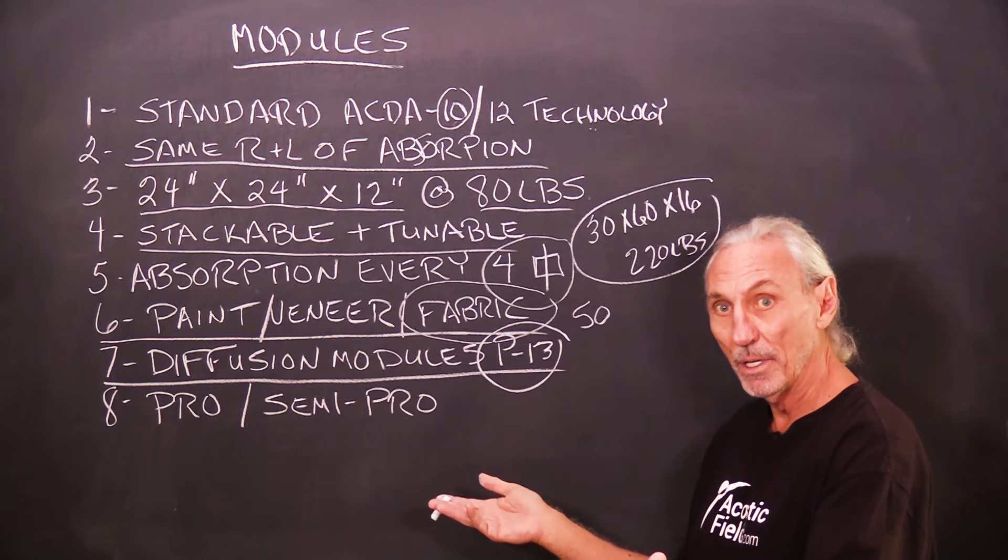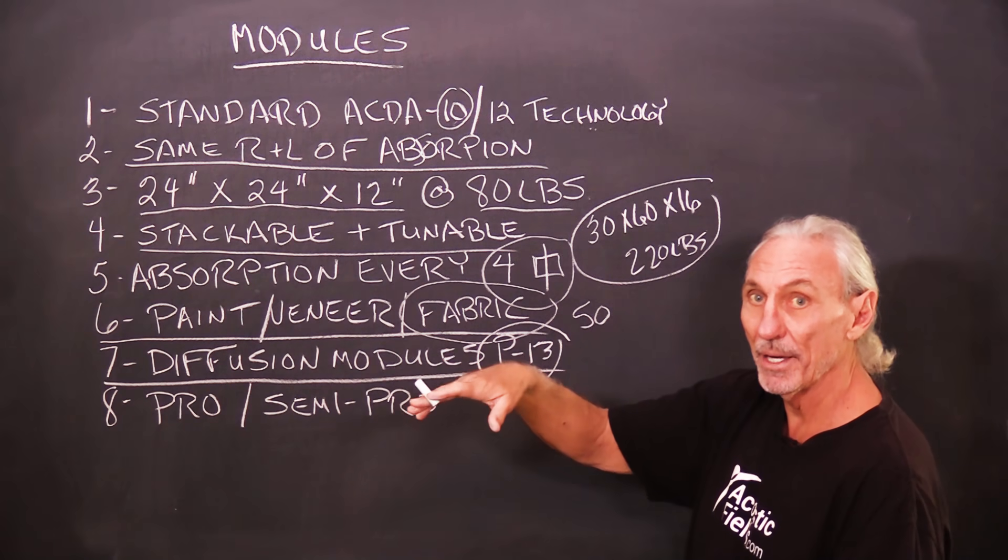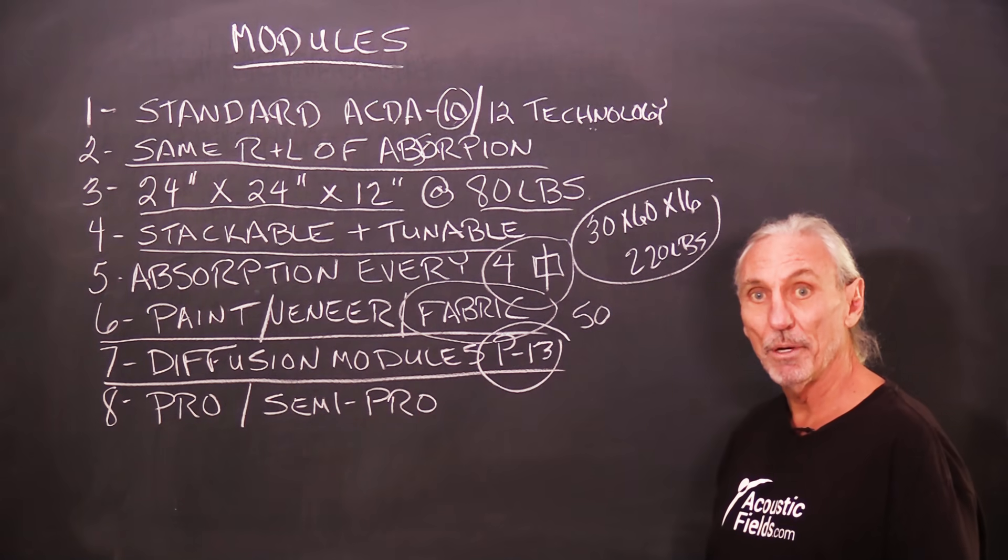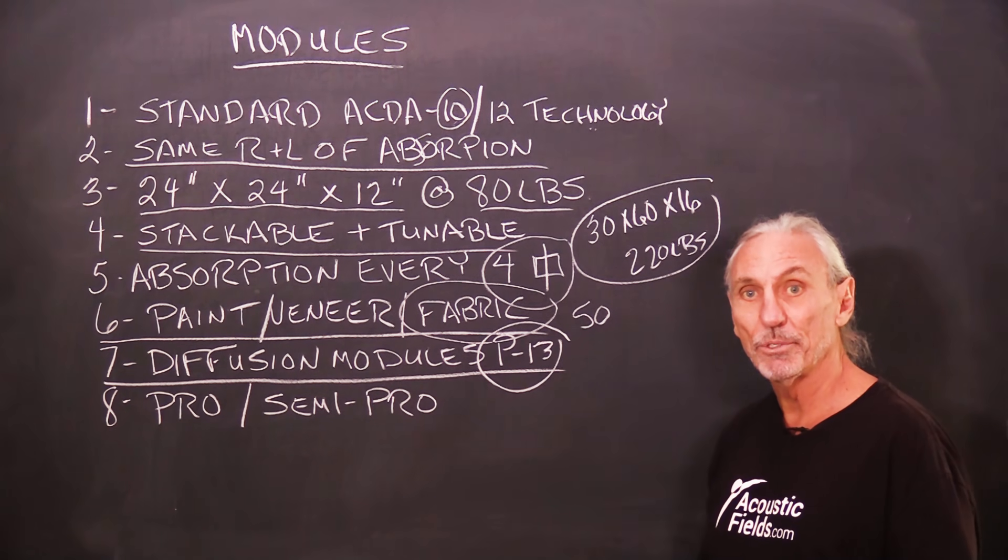We can calculate how many modules we're going to need to put in that area to control that plus 12, get it down to plus 2 or plus 3, and then you guys can polish it up with signal processing.